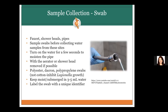For sample collection using a swab, these are more ideal for faucets, shower heads, and pipelines. Sample swabs before collecting water in case there's bacteria in a biofilm on the surface. Turn on the water a little just to get it moist, and if there's a shower head, try to remove it to get inside the piping. Polyester, Dacron, or polypropylene swabs are best — try not to use cotton-based swabs because they can inhibit Legionella growth. Keep the sample moist with a little water from the source you're testing, and label each swab with the sampling location.